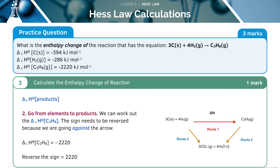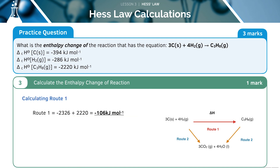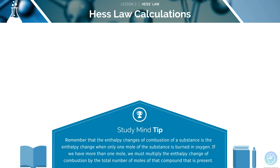Since we are calculating the enthalpy change of combustion of the products, we need to reverse the sign and calculate route 1. If we have more than one mole being combusted, we need to multiply the enthalpy change of combustion by the total number of moles of compound present. This is usual in AQA exams for questions with higher amounts of marks.